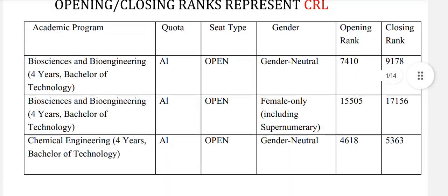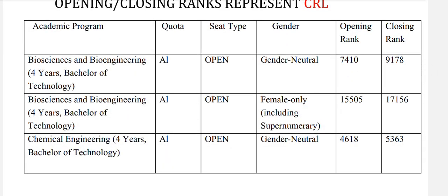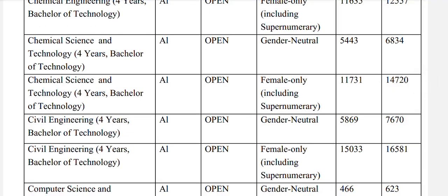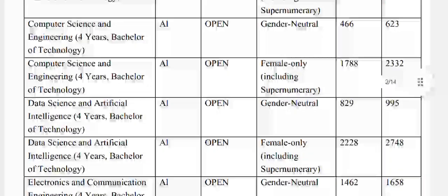The opening and closing ranks represent your CRL. Bioscience and Bioengineering, Open General gender-neutral: 9178, and for females: 17156. Chemical Engineering, Open General gender-neutral: 5363, and for females: 12557. Chemical Science and Technology, Open General gender-neutral: 6834, and for females: 14720. Civil Engineering, Open General gender-neutral: 7670, and Open female: 16581.